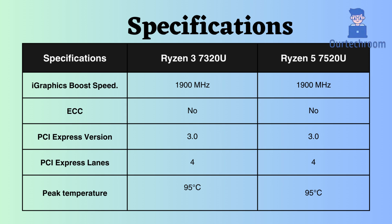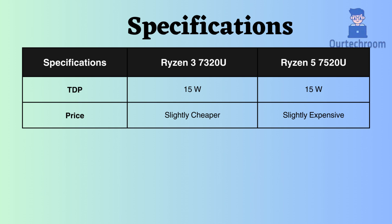Both processors support PCI version 3 and are limited to 4 PCI lanes each. The peak temperature support for both processors is 95 degrees Celsius. The TDP of both processors is fixed at 15W, making them generally considered energy efficient for everyday tasks. They are designed for thin and light laptops, ensuring good battery life.